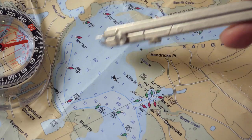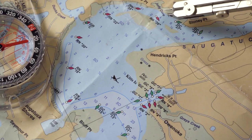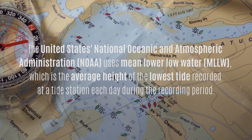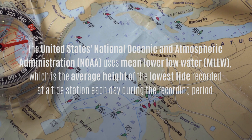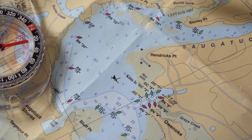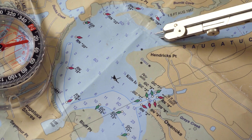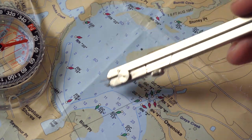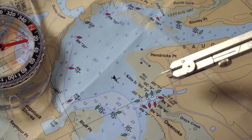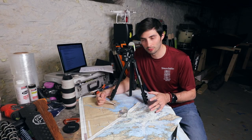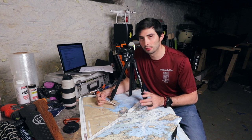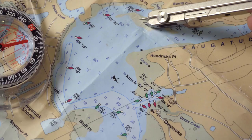Starting with depths — the numbers on the chart represent the water depth. The US NOAA uses mean lower low water, which is the average height of the lowest tide recorded at a tide station each day during the recorded period. So these numbers are pretty accurate to what the depth will be at low tide. However, there will be instances where it could be a little bit lower, so just account for that.